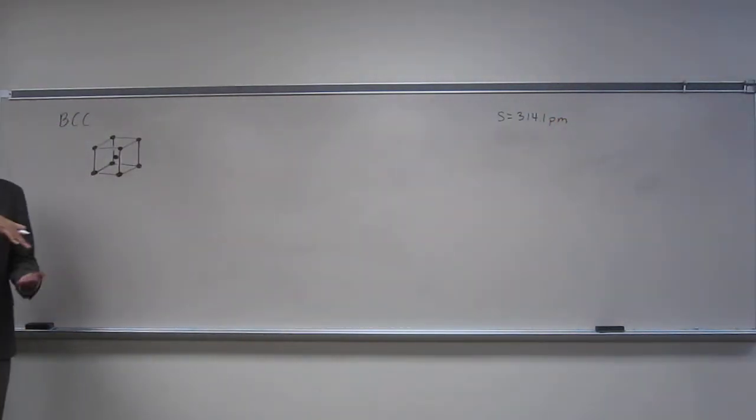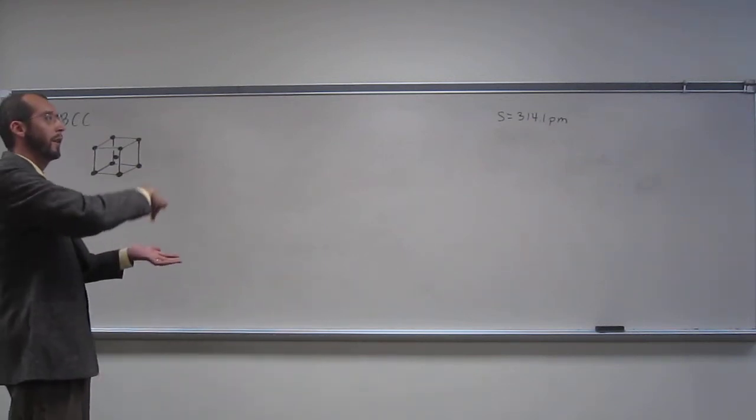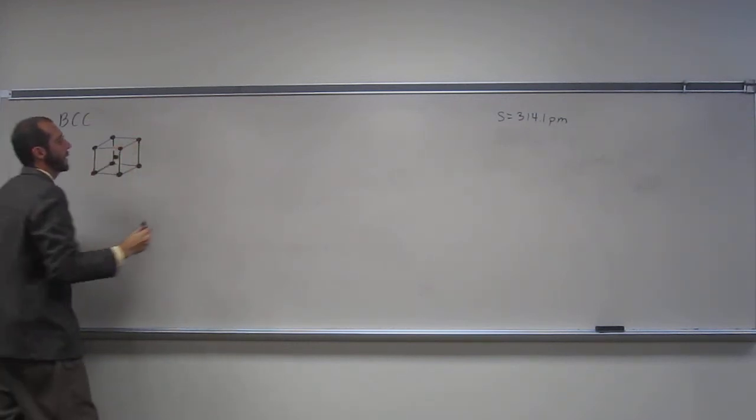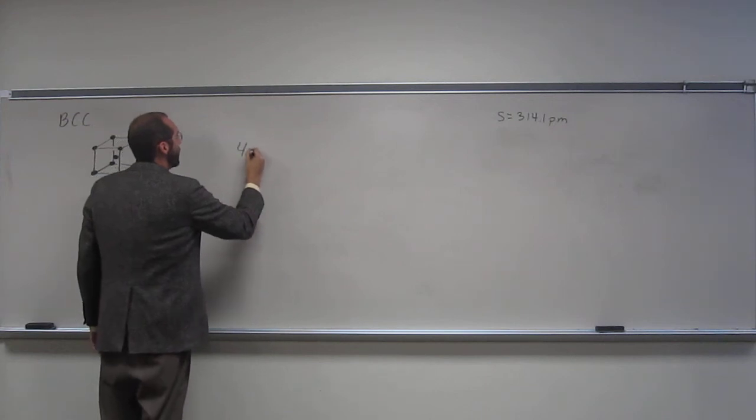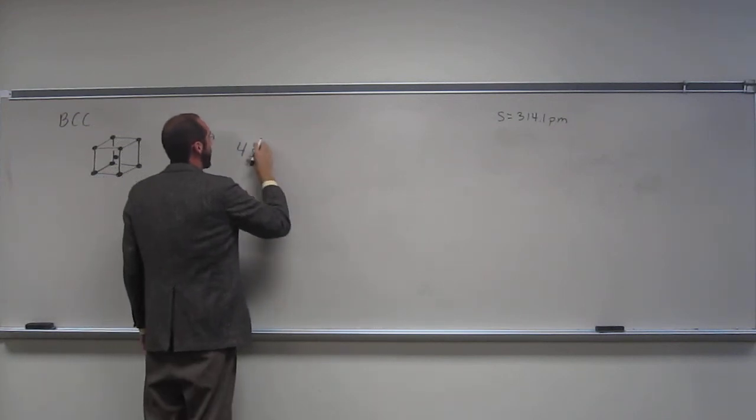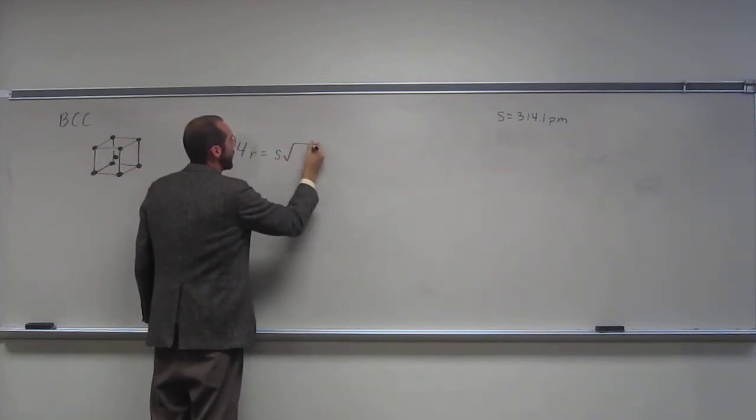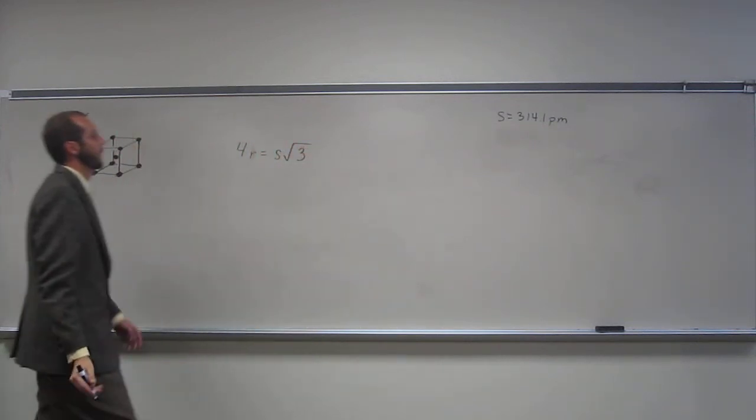And then the body cells, the body-centered, that's the long, the long one, right, so it's going to be 4s, sorry, 4r equals s square root of 3.